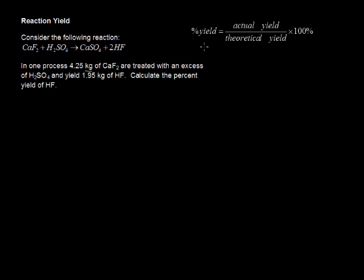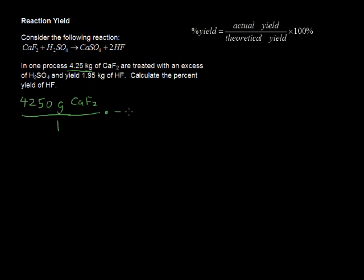Here's what we're going to do. We're going to convert the given 4.25 kilograms into the number of moles. So we have 4,250 grams — because they give us kilograms, but we're going to work in grams right away for CaF2. The reason I'm writing it in grams is because we need to convert this into moles, and the periodic table gives us the molar mass of each element in grams.